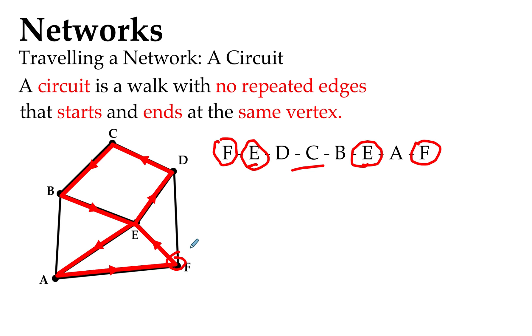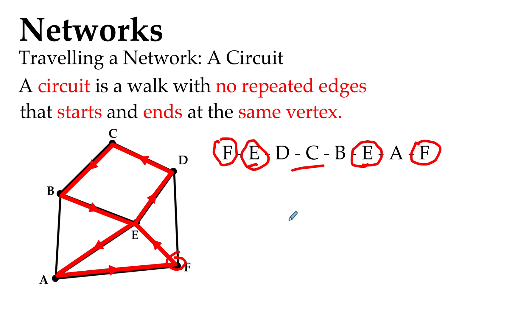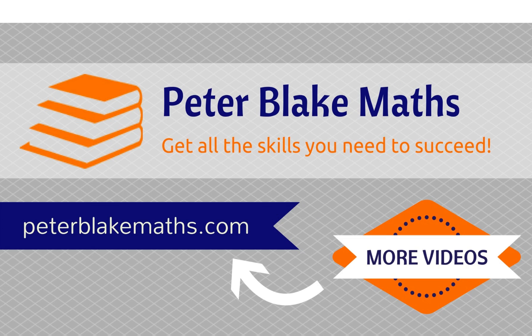I hope that makes sense. I'll see you for the next exciting episode, after I tell you that a circuit can also be called a closed trail. Nice and confusing. A closed trail. Because I guess it starts and ends at the same vertex, therefore kind of closing the route that it takes. See you next time.